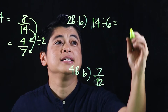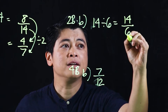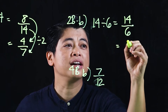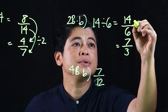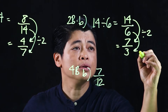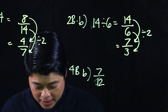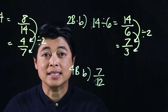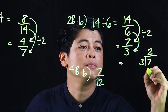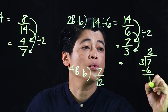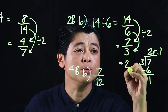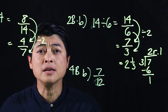Similarly, the next problem is 14 divided by 6, written as a fraction. Both can be divided by 2, giving us 7 over 3. But since it says to write it as a mixed number, we divide 7 by 3: 2 times 3 is 6, subtract to get a remainder of 1.